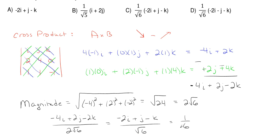So if we pull out the square root of 6, we would have 1 over the square root of 6 multiplied by minus 2I plus J minus K. So which one of these answers is that?